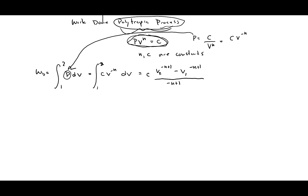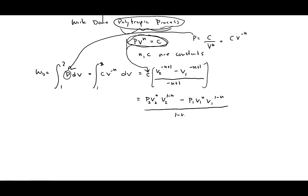Now I go back to the original equation, PV to the N equals C, and substitute P2V2 to the N for C. This works out to P2V2 times V2 to the (1 minus N), minus P1V1 to the N times V1 to the (1 minus N), over (1 minus N). This simplifies to W = (P2V2 − P1V1) / (1 − N).